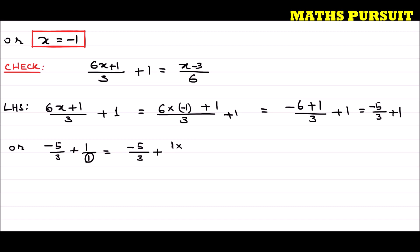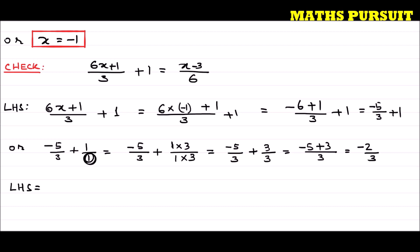Multiplying 3 to the numerator as well as the denominator of 1, we get 3/3. So the left hand side becomes −5/3 + 3/3 = (−5 + 3)/3 = −2/3. So the left hand side equals −2/3. We replaced x with −1, which is the value we found in the previous step.